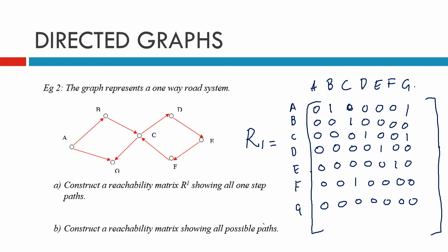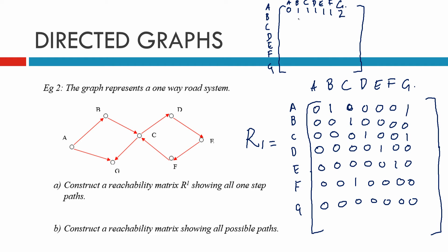Part B asks us to construct a reachability matrix showing all possible paths. Setting up the 7×7 matrix for A, B, C, D, E, F, G: A does not connect to A — zero. A connects to B once, to C once, to D once, to E once, to F once, and to G twice, because we can go A to G directly or from A to B to C to G.